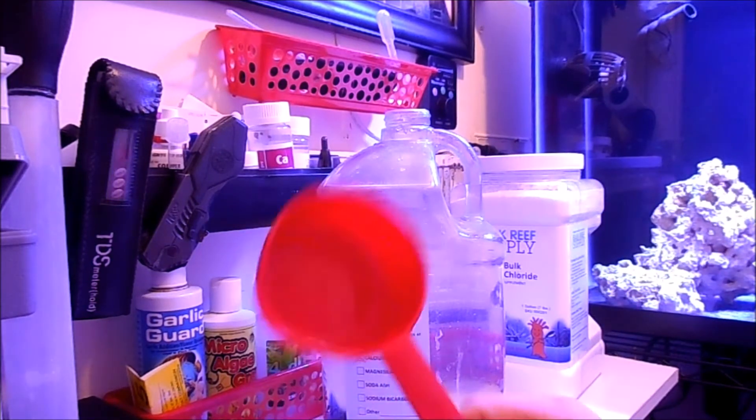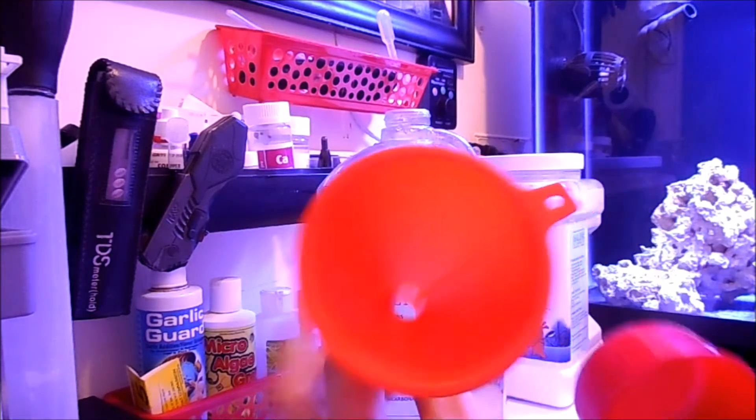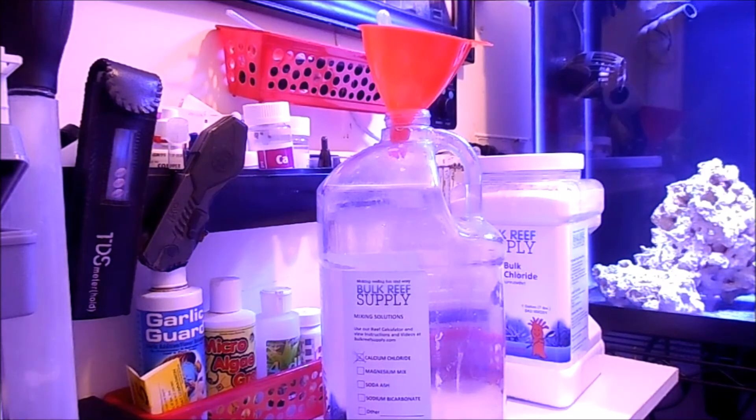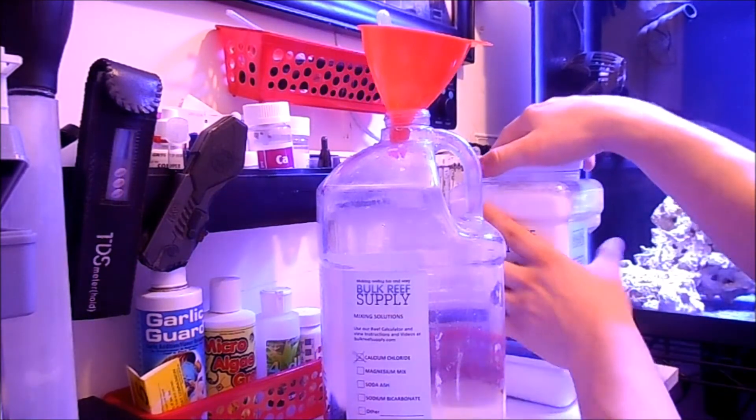One quick note: make sure you dry, or rinse and dry off the funnel and the measuring cups you used previously with the soda ash. Just make sure to get any residue and any of that stuff out before we get started on the calcium. All right, so to get started, we need to add two and one half dry measuring cups of calcium chloride to make one gallon. So we're going to do that now.